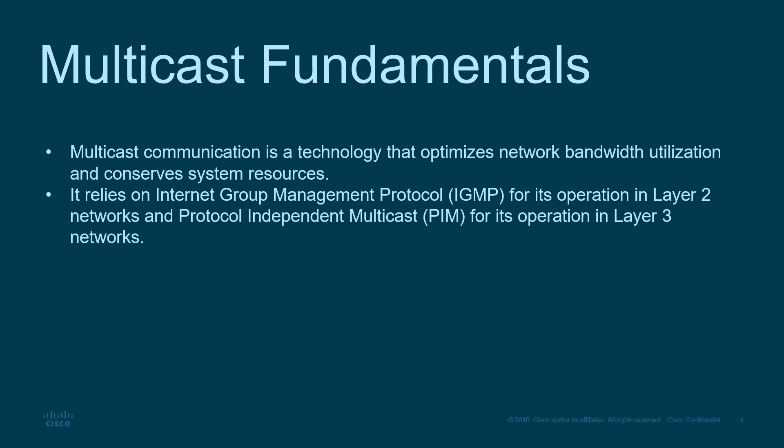How does multicast work? It relies on IGMP — Internet Group Management Protocol — for its operations at both Layer 2 and Layer 3. Protocol Independent Multicast (PIM) is used for Layer 3, while IGMP is for Layer 2. These two technologies go hand-in-hand to allow multicast traffic to flow from source to receivers.